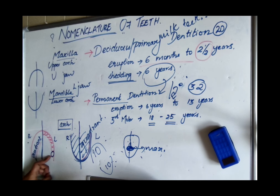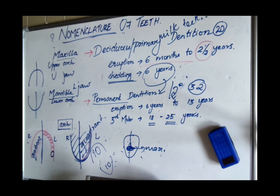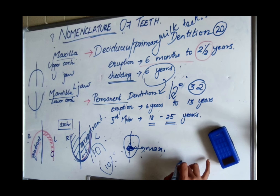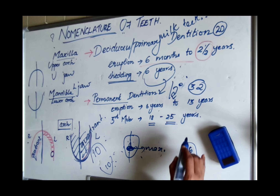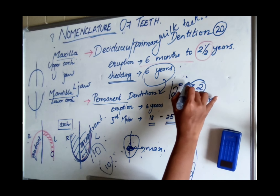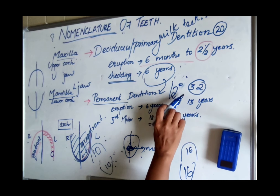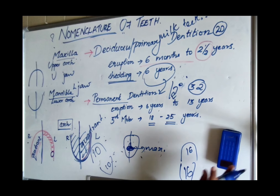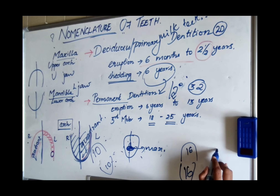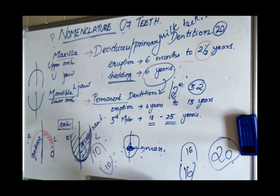There are eight teeth on each side: eight plus eight equals sixteen teeth in one arch. Sixteen in the upper arch and sixteen in the lower arch gives a total of thirty-two. In deciduous dentition, we have twenty teeth. The types of teeth will be described in detail in the dental formula.